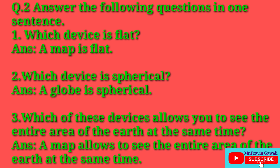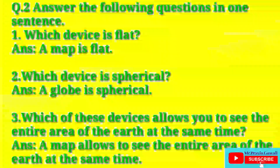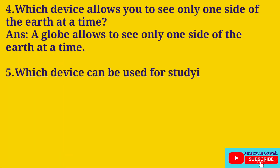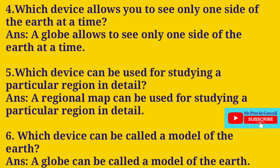Three, which of these devices allows you to see the entire area of the earth at the same time? Answer: A globe allows you to see the entire area of the earth at the same time. Five, which device can be used for studying a particular region in detail? Answer: A regional map can be used for studying a particular region in detail.